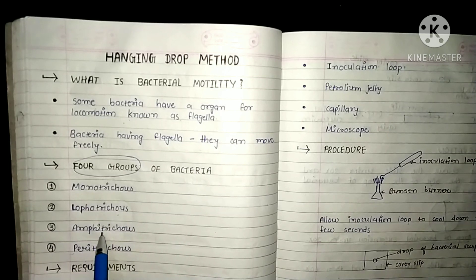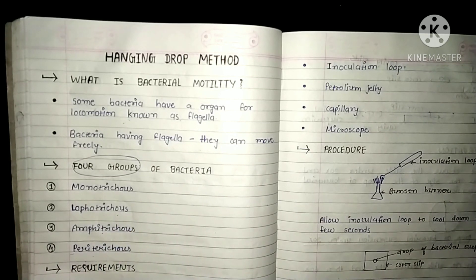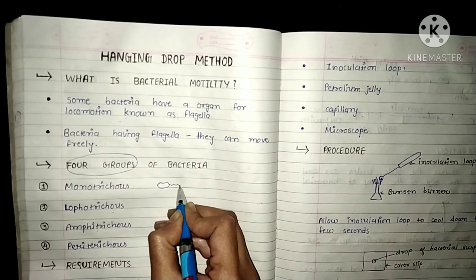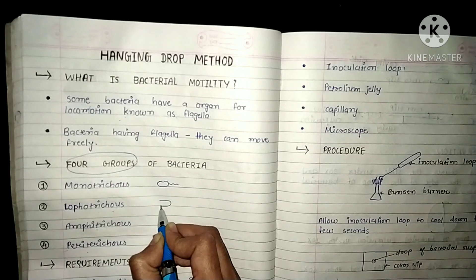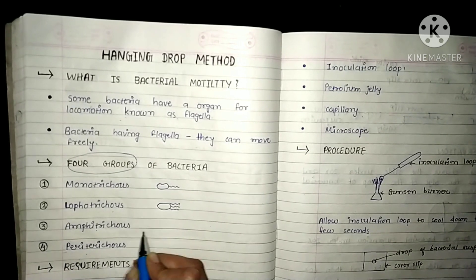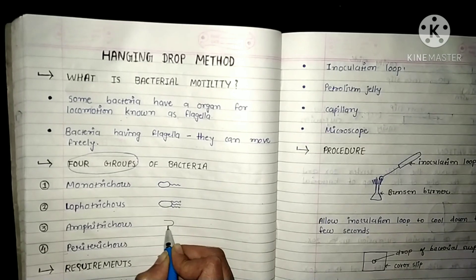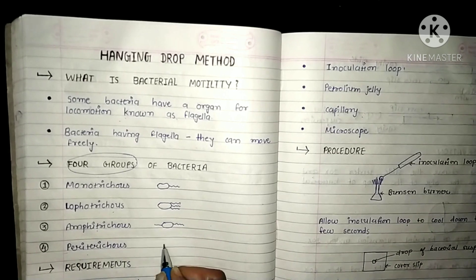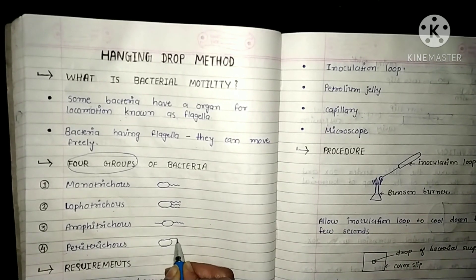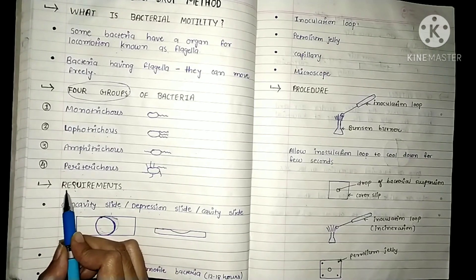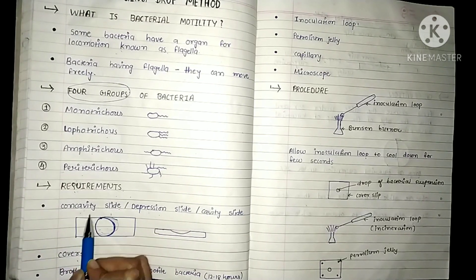The first group is monotrichous, the second is lophotrichous, third is amphitrichous, and fourth is peritrichous. Monotrichous bacteria have a single flagellum at one end of the cell. Lophotrichous bacteria have a bunch of flagella at one end. Amphitrichous bacteria have a single flagellum at both ends of the cell. In peritrichous bacteria, the whole cell surface is covered with flagella.